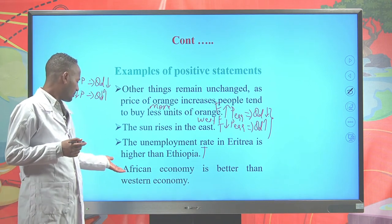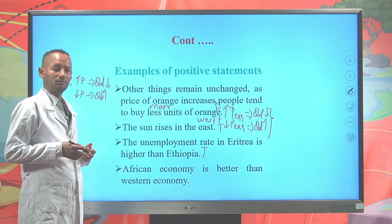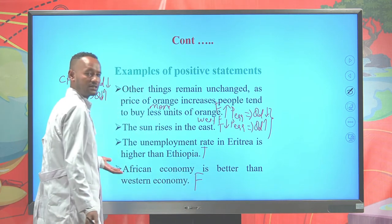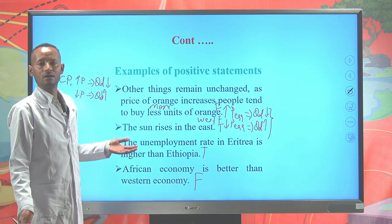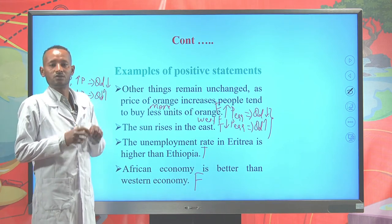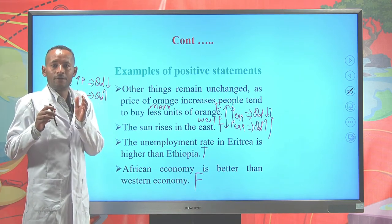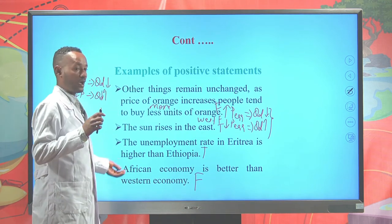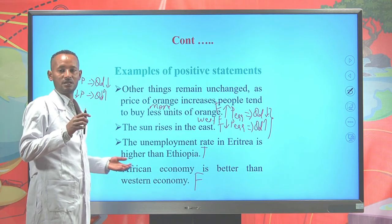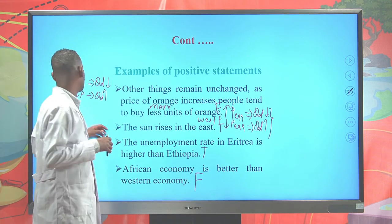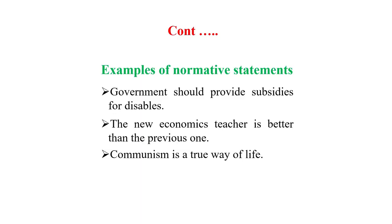Another example: 'The African economy is better than the Western economy.' This is a positive statement — it is false, because we can use indexes such as GDP and GNP to measure the level of economic performance of countries. We can verify it, so it is an example of a positive statement.